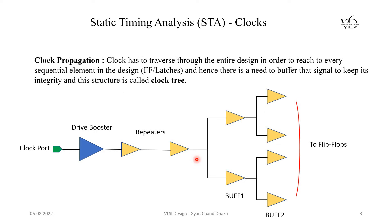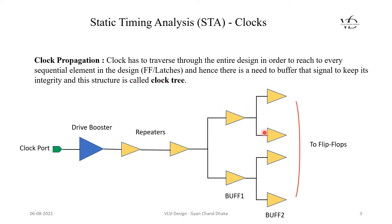Let us see how clock propagation happens in our design. Here you can see this is our clock port, which can be an external crystal oscillator pin, an internal PLL pin, or an internal on-chip RC oscillator pin. From this clock pin we have a drive strength booster, followed by repeaters and buffers, whose outputs go to flip-flops or each sequential element in the design. This structure of flip-flops and buffers is called a clock tree.